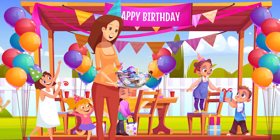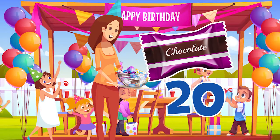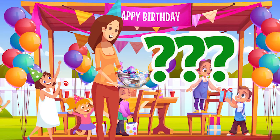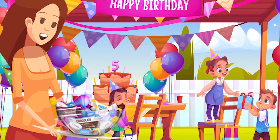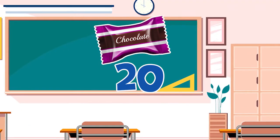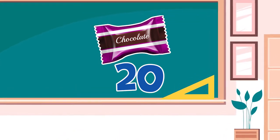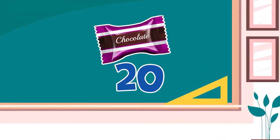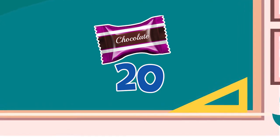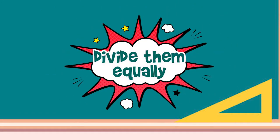But wait, we're not done yet! When her mother knew that she gave the balloons to her friends, the mother also wanted to share 20 chocolates with Anna's friends. In how many ways can she share the chocolates? Help me find how many ways I can share the chocolates with Anna's friends. To find how many ways Anna's mother can share the chocolates equally, we are going to divide them equally.